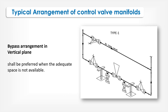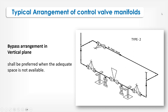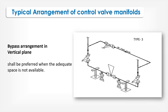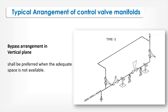Bypass arrangement in the vertical plan shall be preferred when adequate space is not available. This covers Type 1, Type 2, Type 3, Type 4, and Type 5 arrangements.